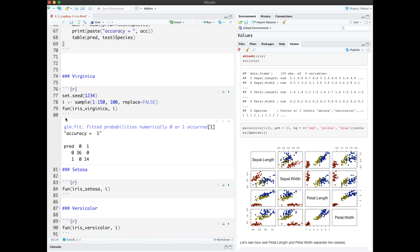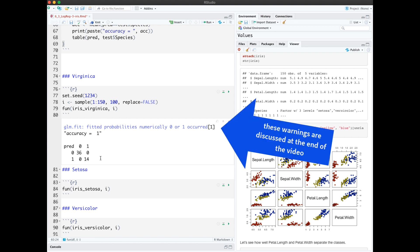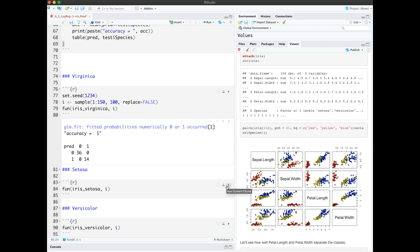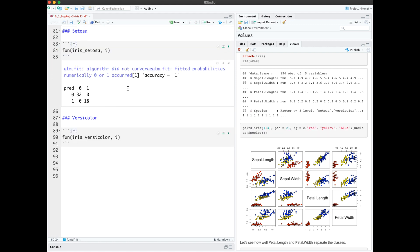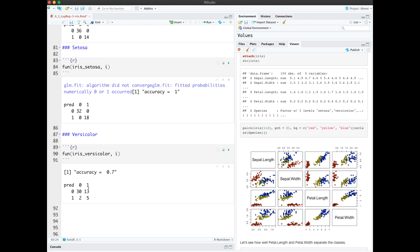Here we're applying our function to the Virginica dataset and we get an accuracy of one. Notice that there are no misclassified observations. Also in Setosa, we got an accuracy of one. Versicolor didn't do as well. We had an accuracy of 0.7. Since the data is divided evenly 50-50-50, we could just average our results together to get an overall accuracy.